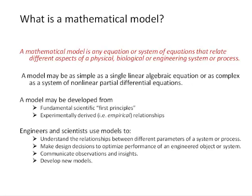So what do we mean when we use the term mathematical model? A mathematical model is any equation or system of equations that relate different aspects of a physical, biological, or engineering system or process. A model may be as simple as a single linear algebraic equation or as complex as a system of nonlinear partial differential equations, or anything in between. A model may be developed from fundamental scientific first principles, or it might be experimentally derived using empirical relationships, or some combination of these two approaches.